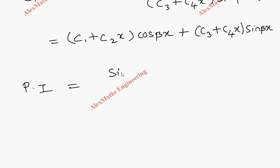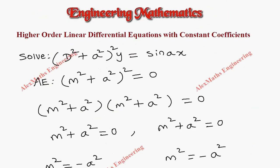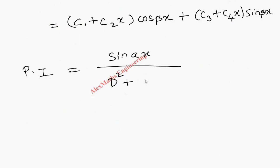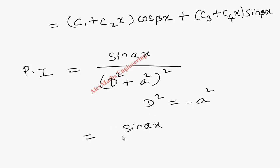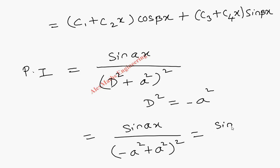On the right-hand side we have sin(ax), and in the denominator it is (D² + a²)². As per the procedure, wherever D² appears we substitute minus a². Doing so, the denominator becomes (−a² + a²)² = 0. When the denominator becomes zero, we must multiply the numerator by x and differentiate the denominator.